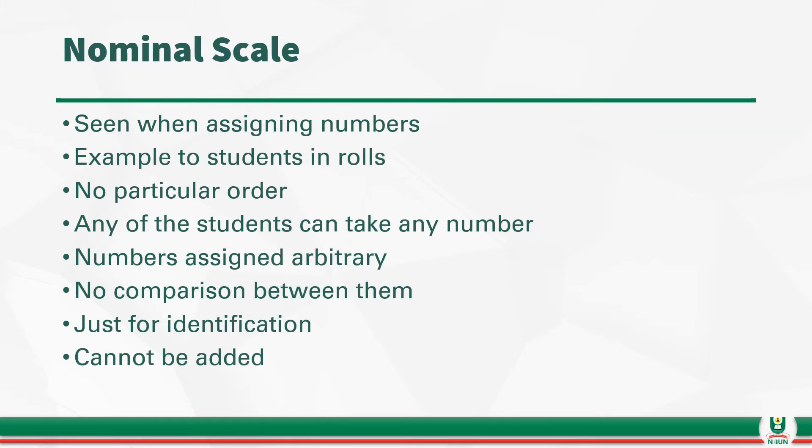But what is the nominal scale? The nominal scale is seen when assigning numbers. Let's say students are in a row. There is no particular order. They just stand in a row. And you decide to give them numbers in order to identify them. Say, you are number 1, you are number 2, you are number 3. There is no particular thing you attach to those numbers. They are just arbitrarily assigned. So, there is no difference between them. You cannot compare, say, number 1 and number 10. There is no comparison. You cannot subtract from them.